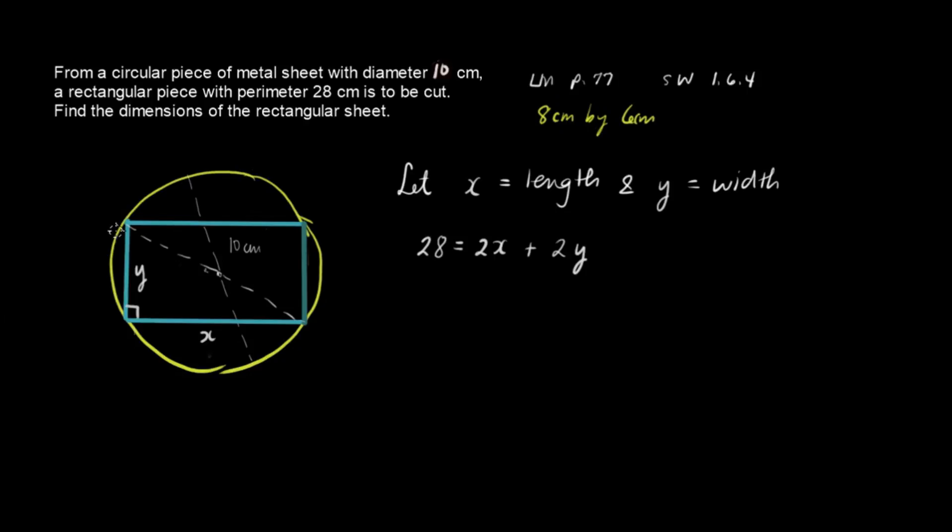If we have a right triangle, we can use the Pythagorean theorem. So we have x squared plus we have y squared is equal to the square of this. And this is equivalent to the diameter of the circle, which is 10. So we have 10 squared.